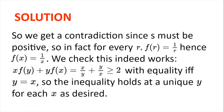We check this indeed works. With f(x) = 1/x, x·f(y) + y·f(x) = x/y + y/x, which is ≥ 2 by the AM-GM inequality, with equality if and only if x/y = y/x. So x² = y², which for positive reals holds if and only if y = x. So the inequality holds — that is, x·f(y) + y·f(x) ≤ 2 — at a unique y, namely y = x, for every x. And so we are done.